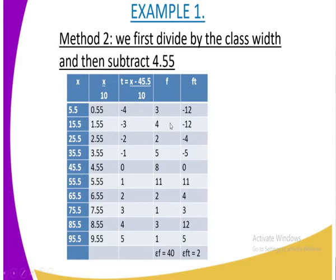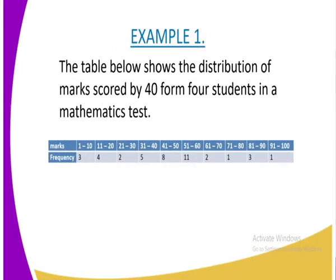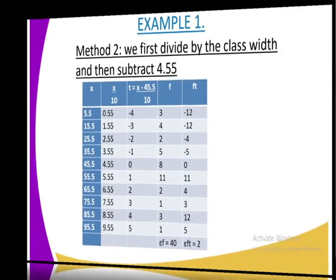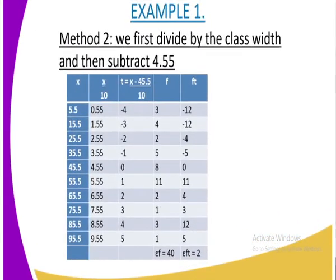We also have another column of frequency, which is being represented on this slide, so that is not changed. You just copy it as it is. Then we have ft, which means you are getting the frequency and multiplying by the digits that you got after you subtracted X from the assumed mean. The total number of frequency, or the total number of students, is 40, and the total ft is 2.